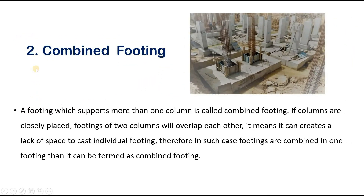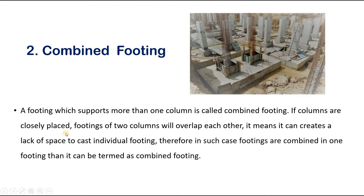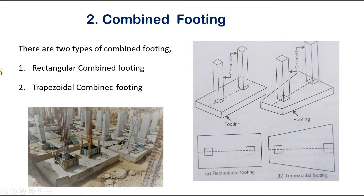The next type of footing is combined footing. A footing which supports more than one column is called combined footing. In any type of building construction, if the columns are closely spaced, the footings of two columns will overlap each other, creating a lack of space for individual footings. Therefore, the footings are combined into one, and it is treated as a combined footing.